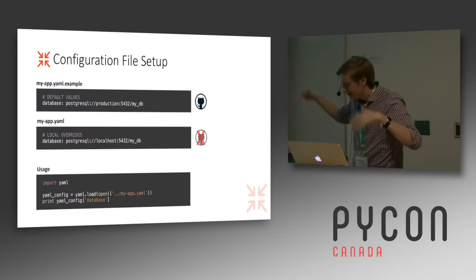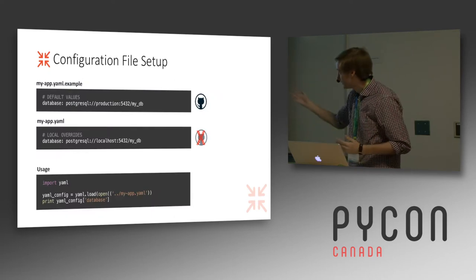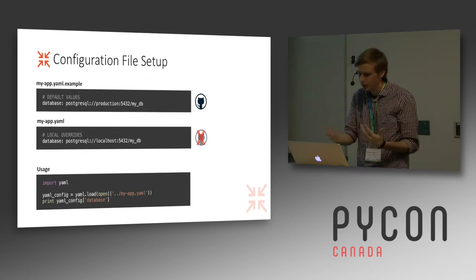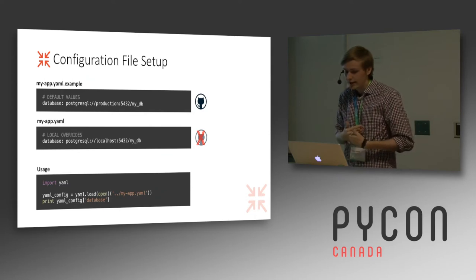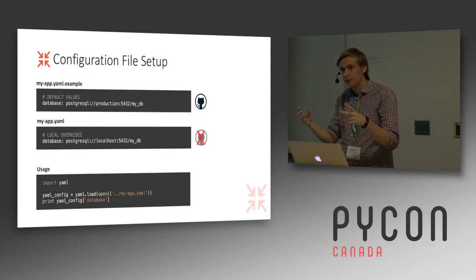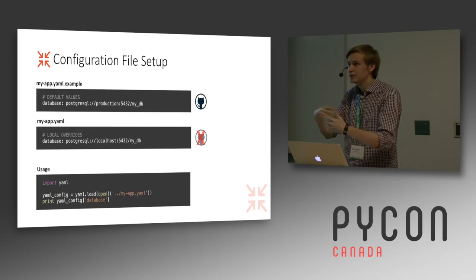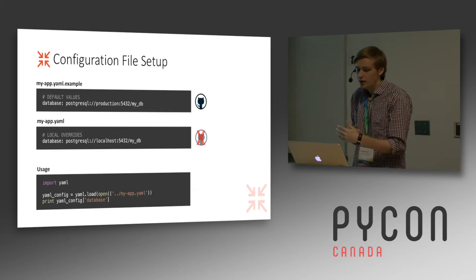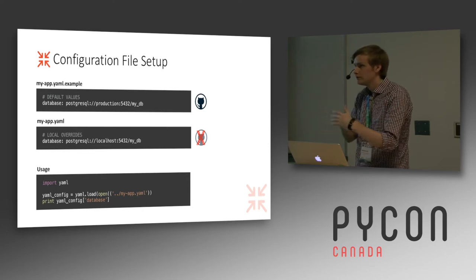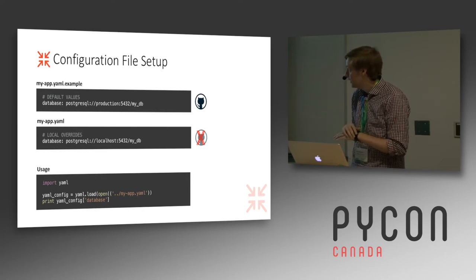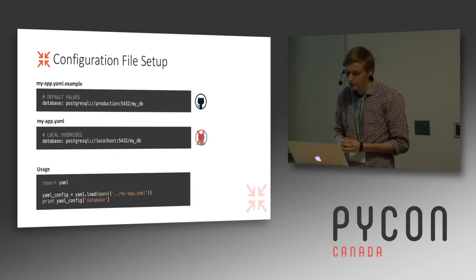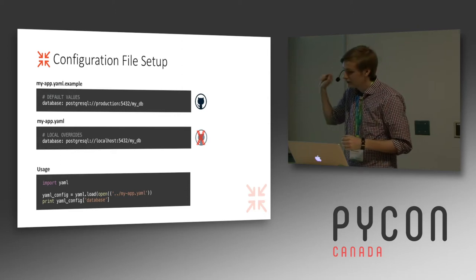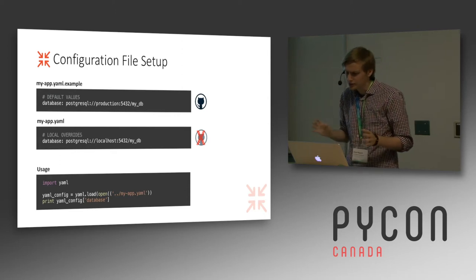To avoid hard-coded variables, there are a lot of different types of configuration files — YAML is a popular format. The general practice is to have an example template with default values checked into your Git source tree. Whenever people want to modify environment variables, they make a copy of that file that doesn't get checked in — it overrides all those values. This allows you the flexibility of loading these variables at runtime without specifying them explicitly in source code.